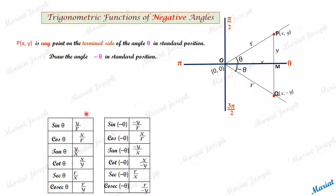But look at the first ones. Sin theta and sin minus theta. They are numerically equal, y by r, but opposite in sign. This is y by r, this is minus y by r. So we can say sin minus theta is minus sin theta.